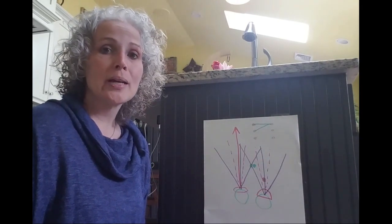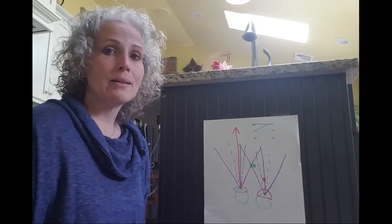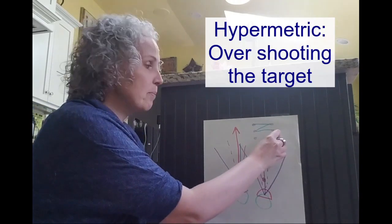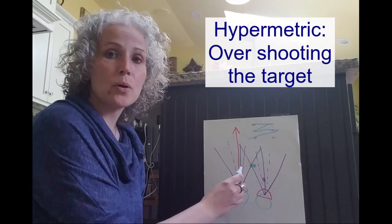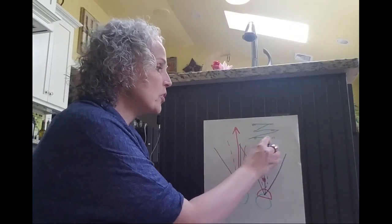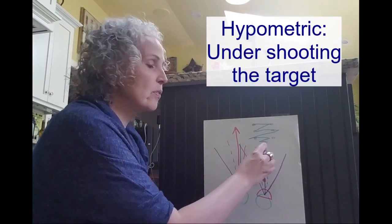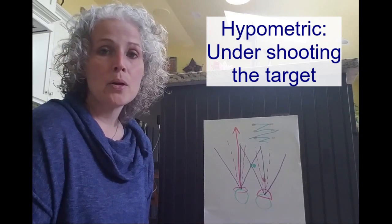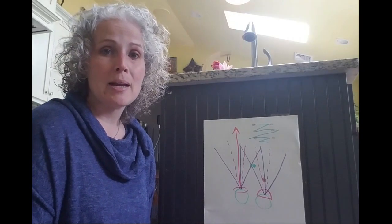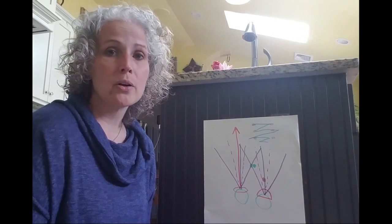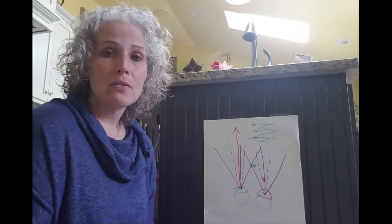But sometimes what can happen is that skill is not efficient and you either overshoot your end target and you're doing extra work by going a further distance and then coming back to your point, or you're undershooting and you're not getting all the information that you need. So if you have a saccadic problem, you might not be understanding everything that you've read because you're either doing extra work or you're not reading the full line.